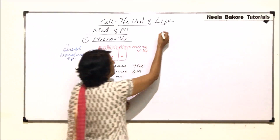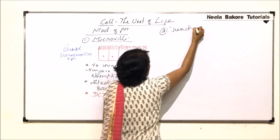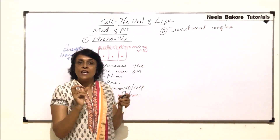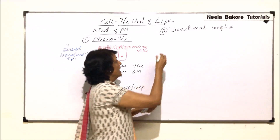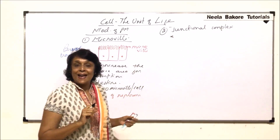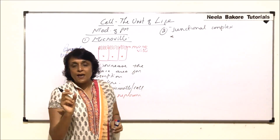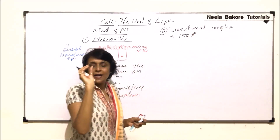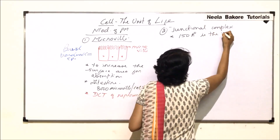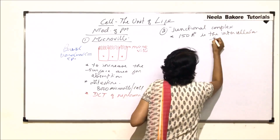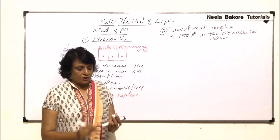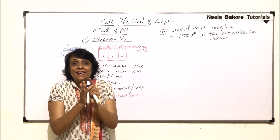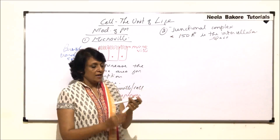The second type are called junctional complexes. Whenever we use the word junctional complex, we are talking about certain changes in the plasma membrane between the cells. Between the cells there is a space known as the intercellular space — normally approximately 150 Angstrom of space is available. If there are certain changes taking place in the plasma membrane between adjacent cells, those are termed as junctional complexes.